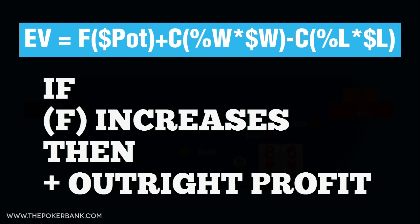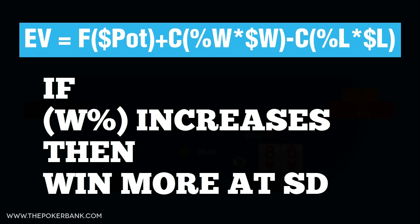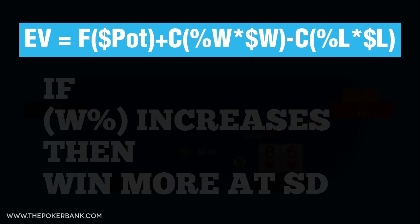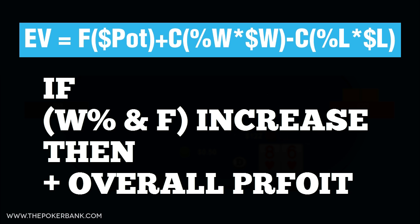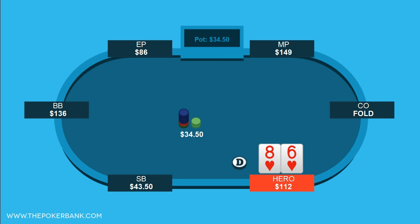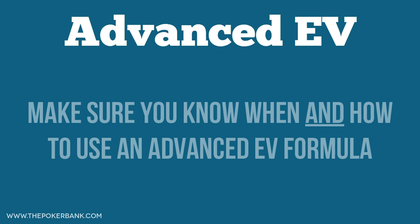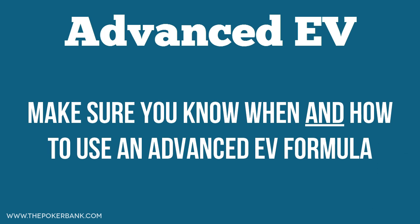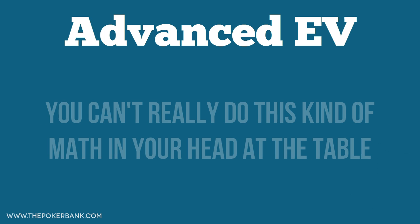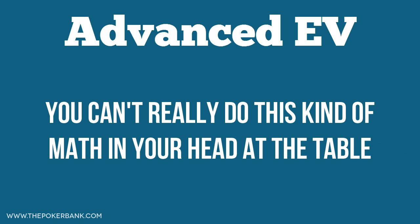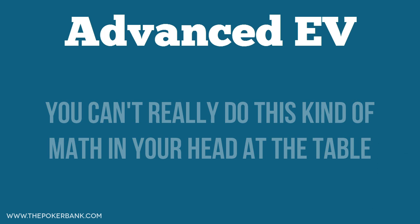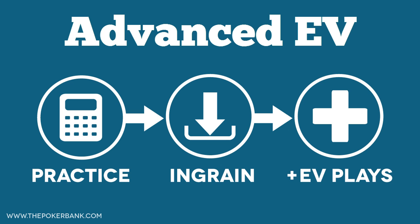Essentially, the more villain folds and we pick up the pot outright the better for us. The more equity we have when called the better, since we'll pick up the all-in pot more often and lose less often. And if we can ever increase both our equity when called and the times villain folds preflop, the better our semi-bluff will be. Knowing how and when to expand the basic EV formula can greatly benefit you on and off the table. In real time you won't be able to plug and play with the formula, but with enough off-table practice things will get ingrained and you will be able to more correctly estimate the math at the tables.